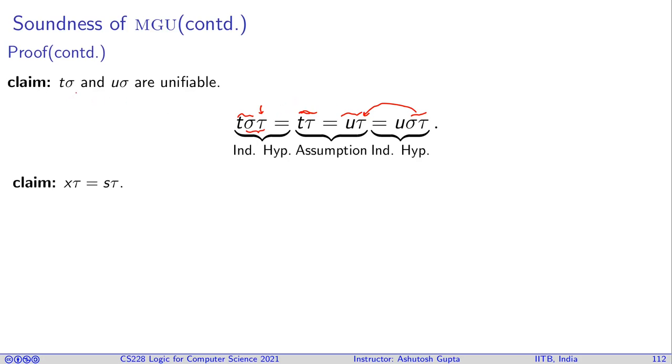So all intermediate terms in your Robinson's algorithm are unifiable. It never breaks by making any move on sigma.